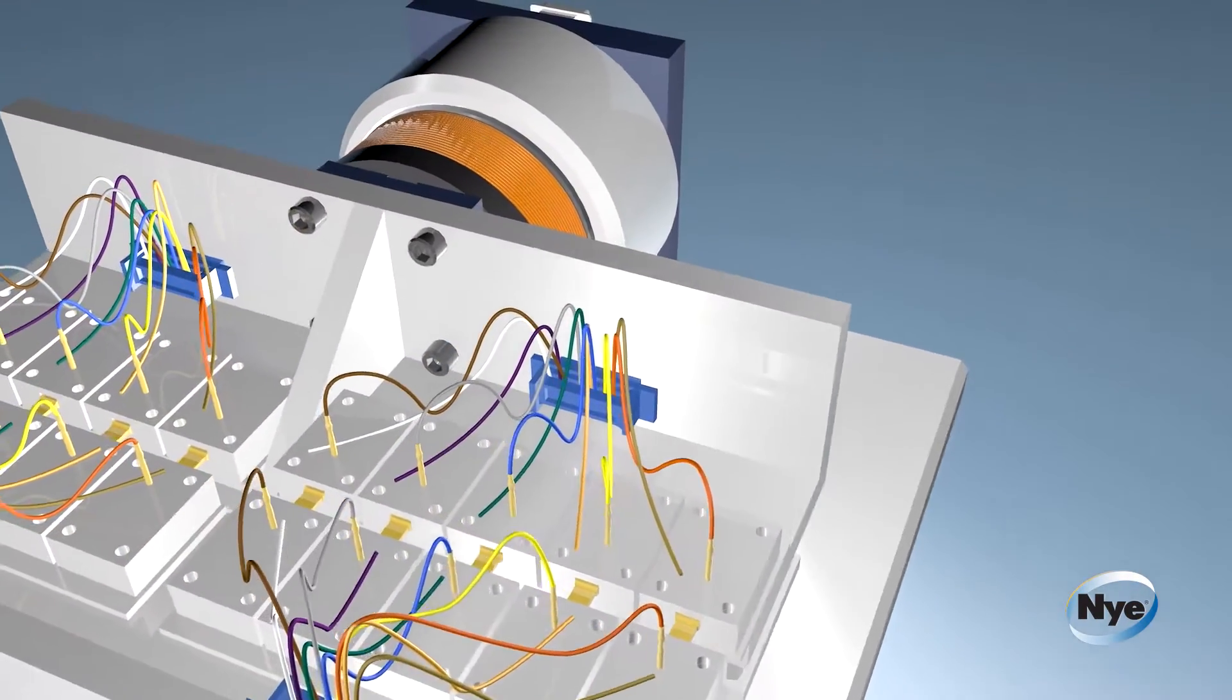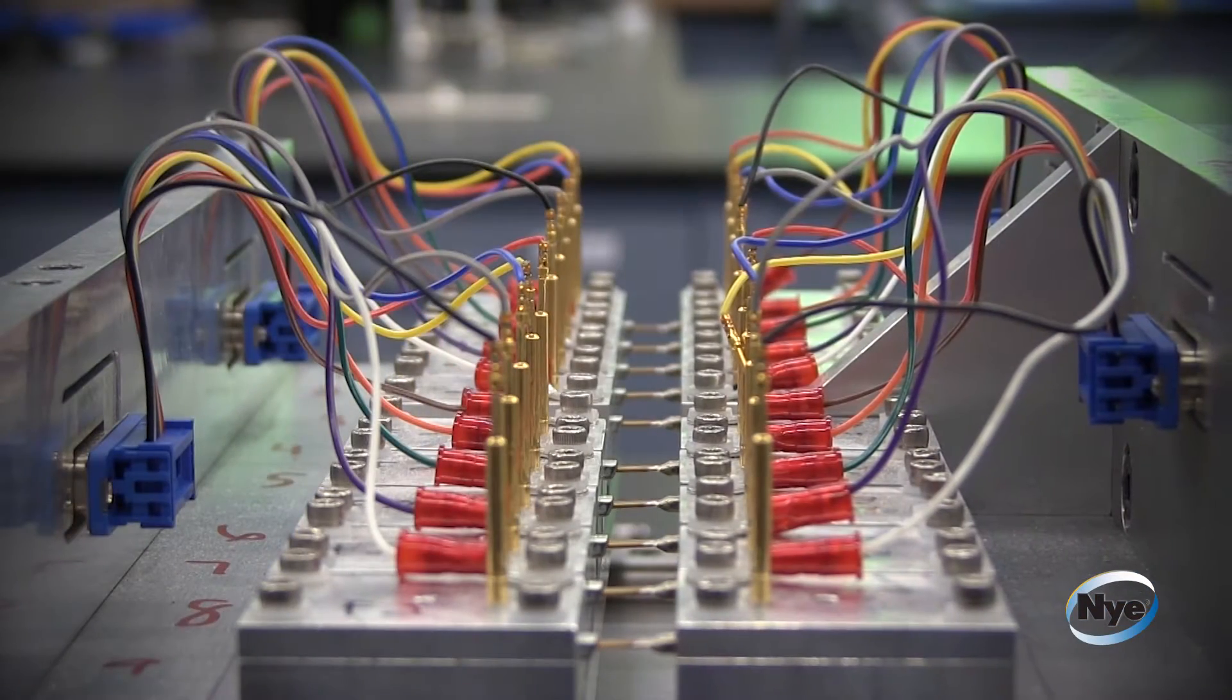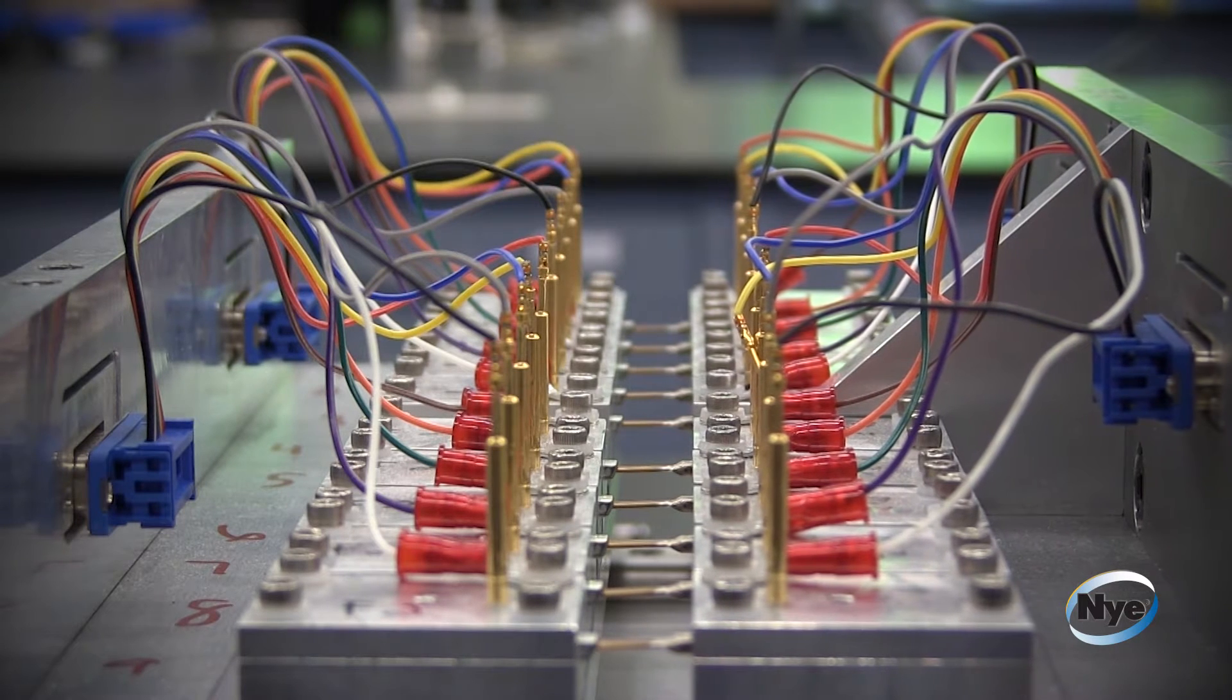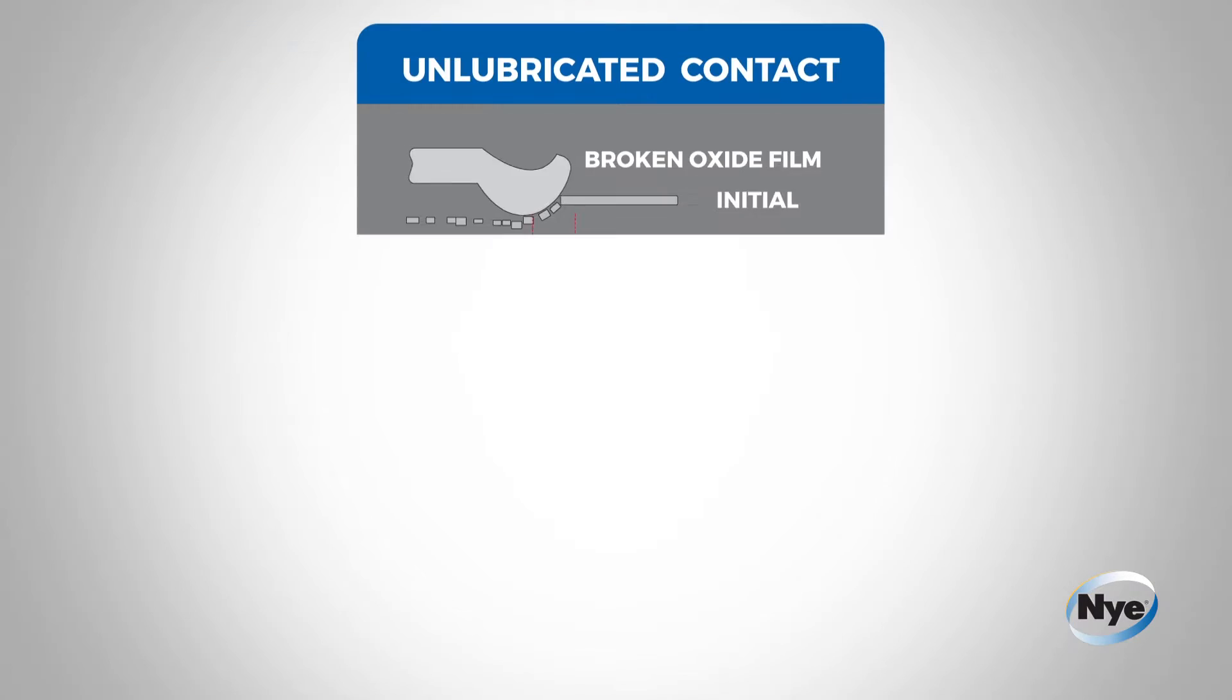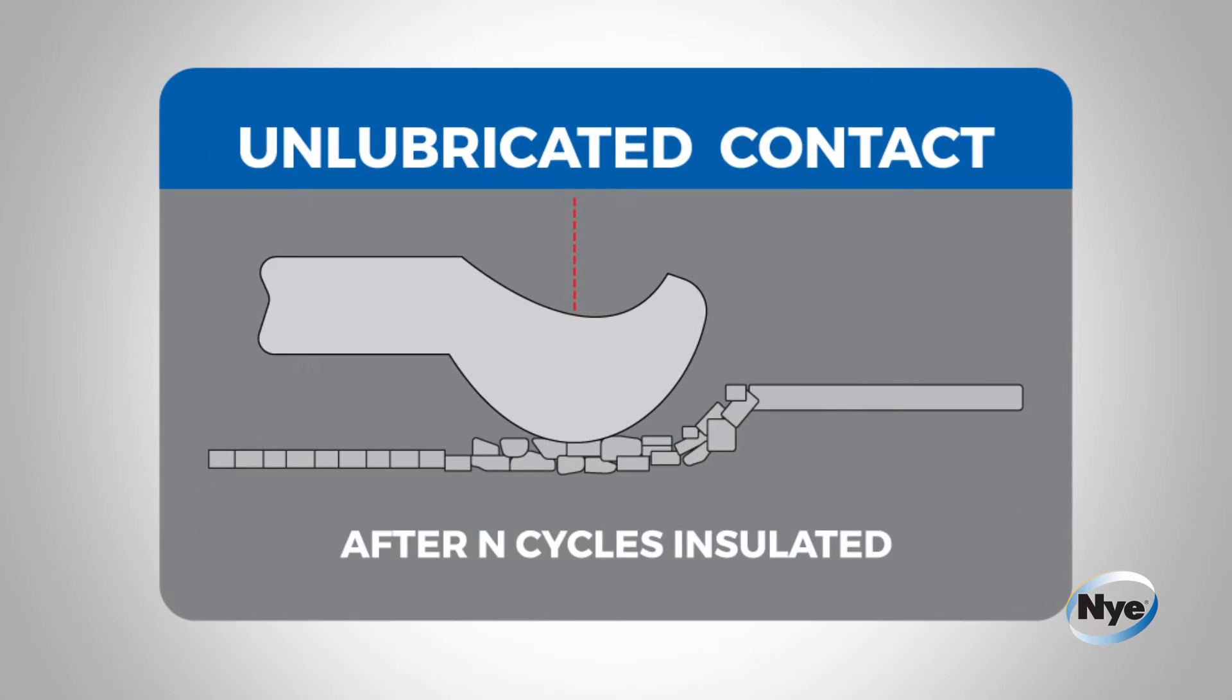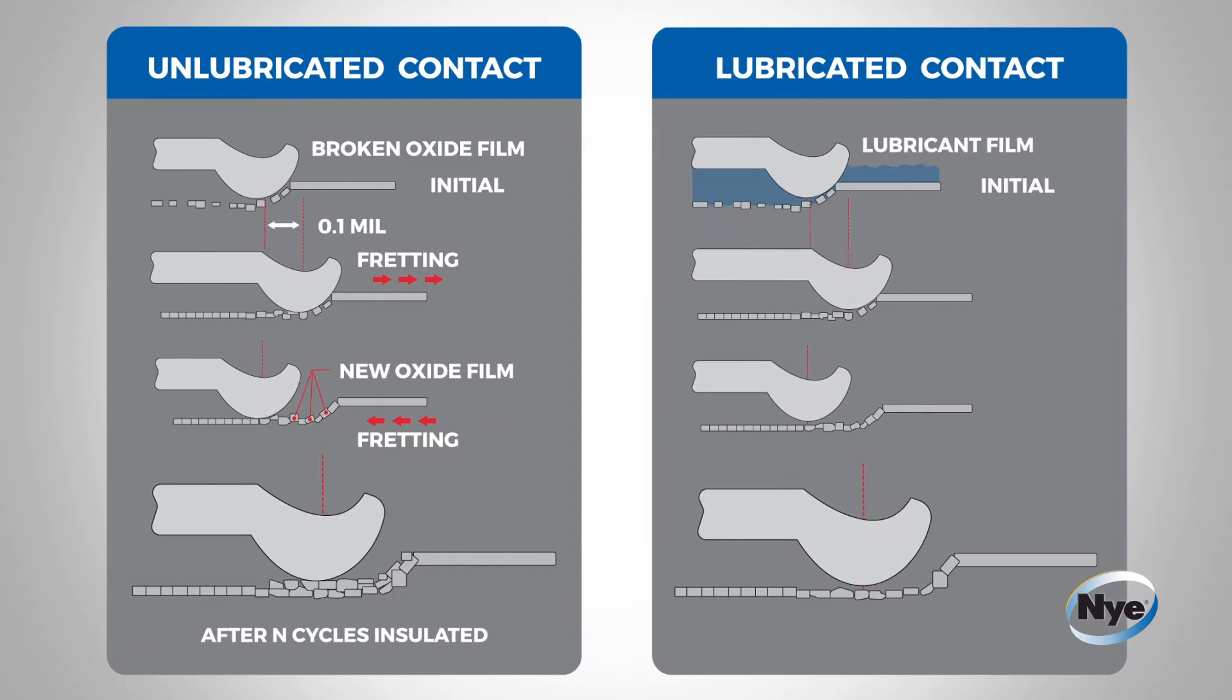Fretting wear refers to a mechanical and chemical wear mechanism where the sliding contact between two surfaces creates wear which becomes oxidized. This process continues at an exponentially higher rate once oxidized wear particles are created. The failure mechanism is when enough oxidized wear debris has been created and the contact resistance increases to a level where continuity in the contact is lost.